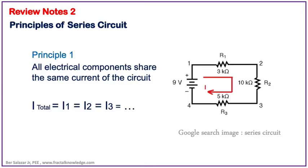The first principle sa series circuit is all electrical components share the same current in the circuit. With that principle, we can say that the total current I equals I1 equals I2 equals I3 and so on. This principle is very useful. Please put it into your memory.